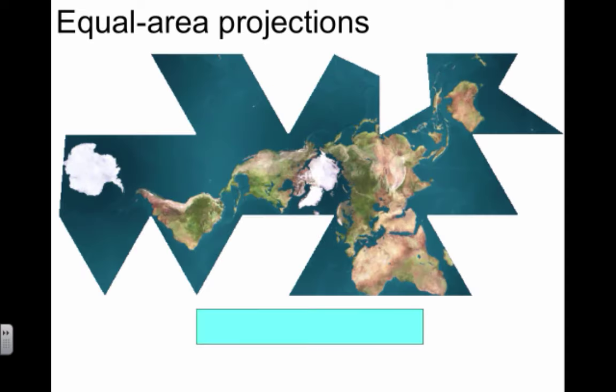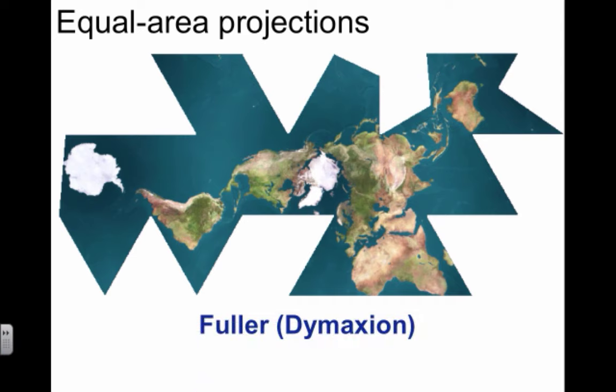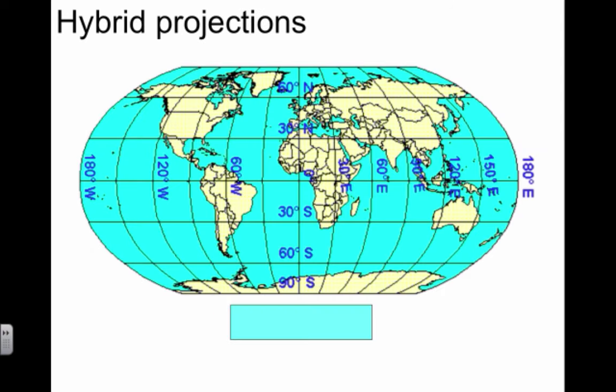I showed you this before—the Fuller, also known as the Dymaxion projection. Basically, you take a sphere, turn it into an icosahedron with 20 sides, flatten it out, and here you go. The goal is to keep the shapes of landforms as accurate as humanly possible.